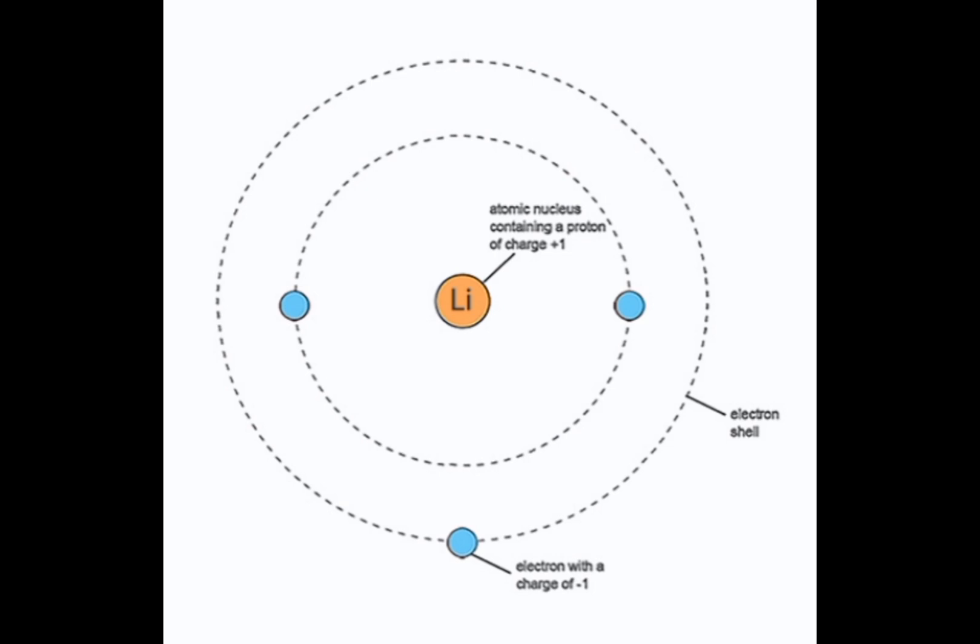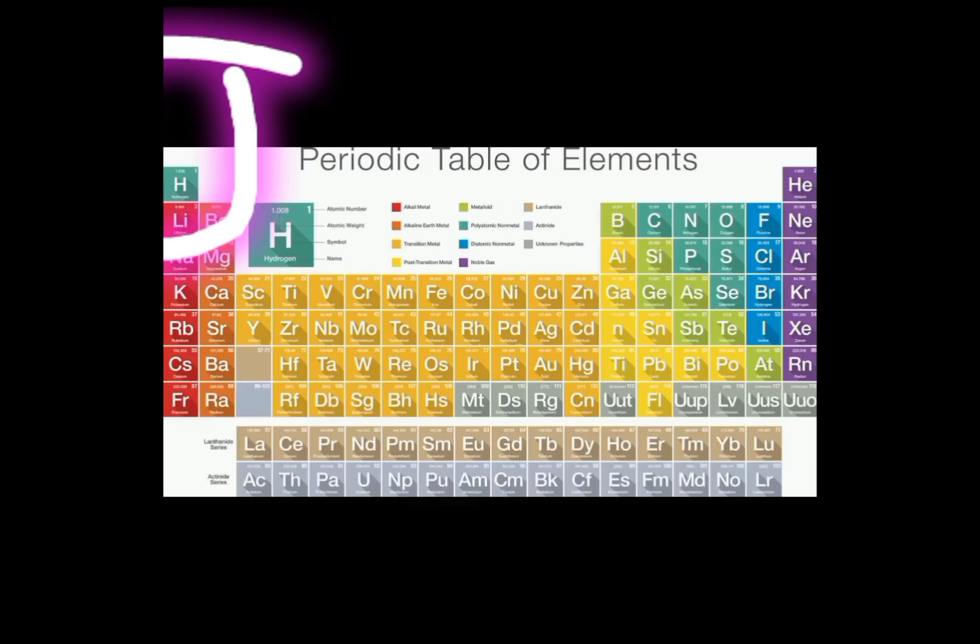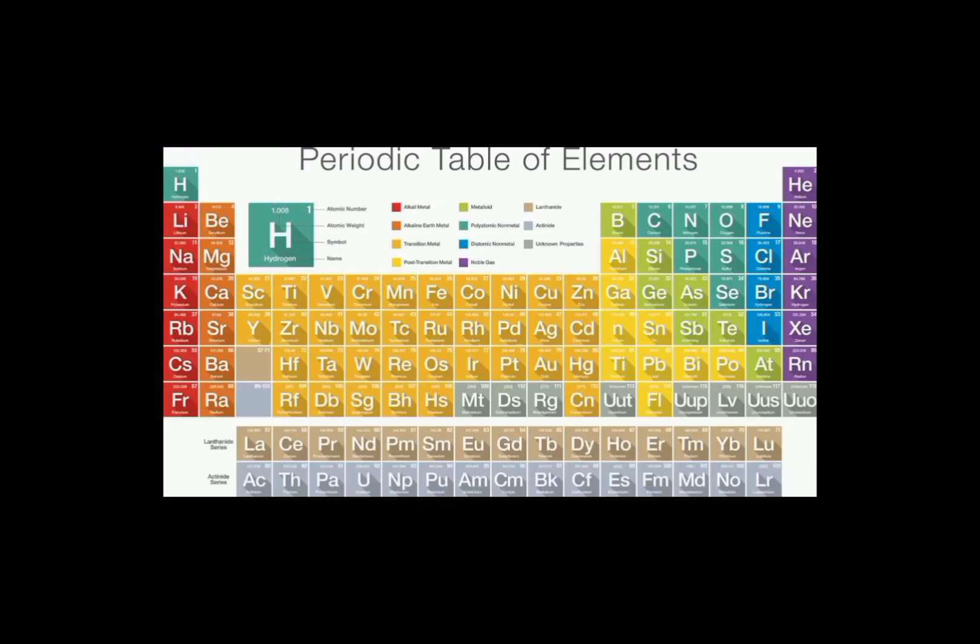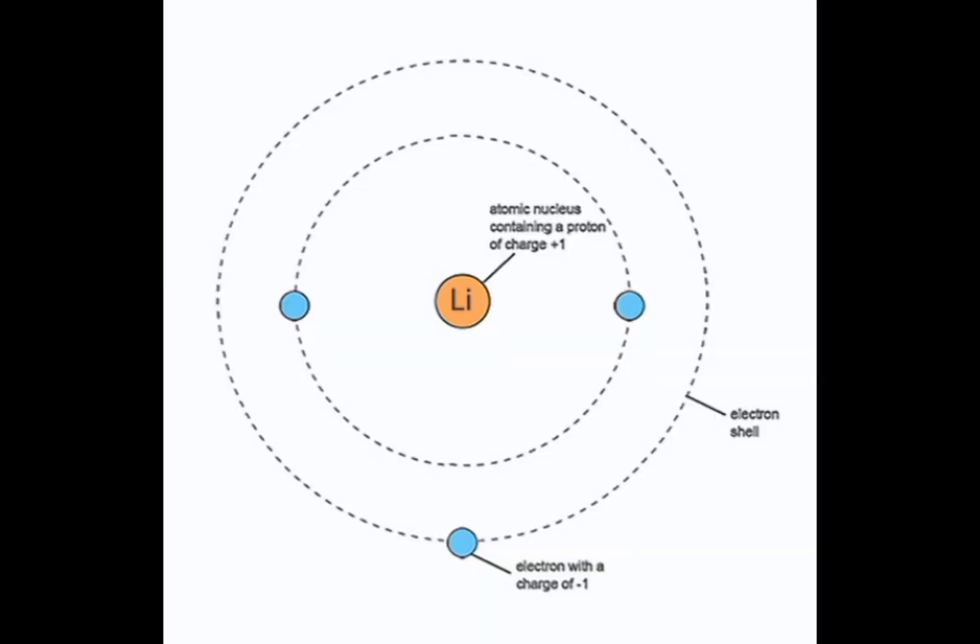Lithium is alkali metal with the atomic number three and atomic mass of 6.941 grams per mole. Lithium atomic structure has three protons, three electrons and four neutrons.